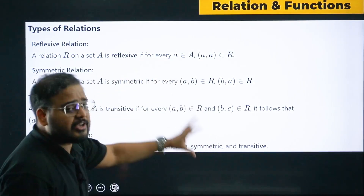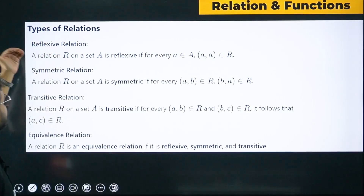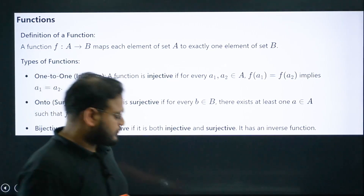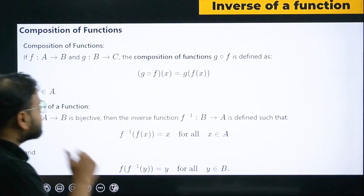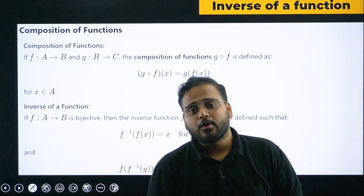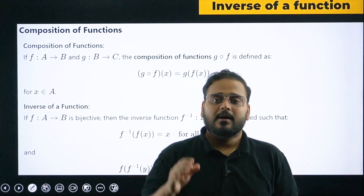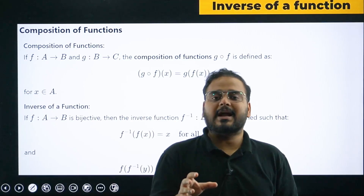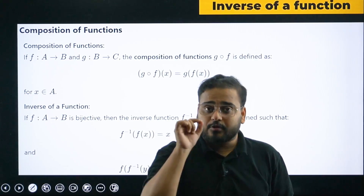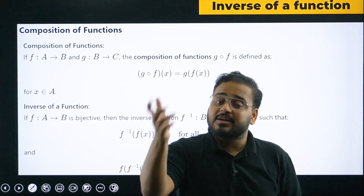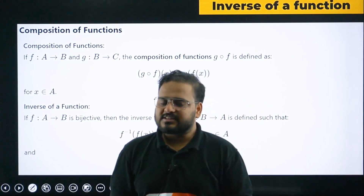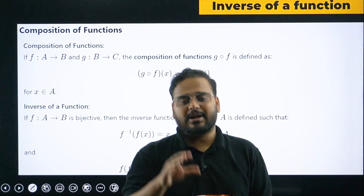In the notes, you'll have all chapters listed. For relation and functions, formulas for types of relations — reflexive, symmetric, transitive — everything is given chapter-wise. Basic formulas like inverse of a function should be properly memorized because during the examination tomorrow, almost 30 out of 60 questions will be direct approach-based questions. If you take time on those, you won't do justice to the other 30 challenging and lengthy questions. There will be at least eight to nine very lengthy questions.